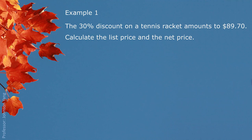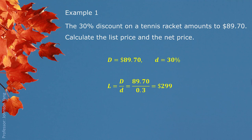Let's look at some examples. A 30% discount on a tennis racket amounts to $89.70. Calculate the list price and the net price. From this question we have $89.70, which is the dollar-described trade discount, and 30%, which is the rate of discount. With these two pieces of information we can find list price directly: capital D divided by lowercase d gives us $299 as the list price. Then by subtraction we get net price of $209.30.